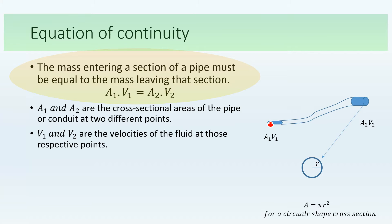Consider this hole as a section of a larger pipe. The liquid entering this cross-sectional area will be equal to the liquid leaving at this point, according to the law of conservation of mass — mass can neither be created nor destroyed. So the total mass entering at this point will equal the total mass leaving.